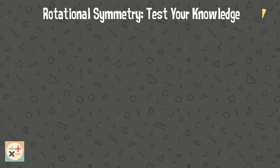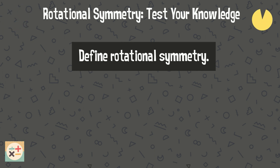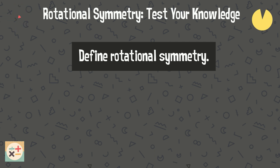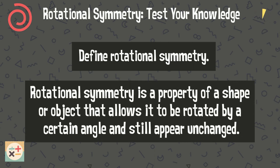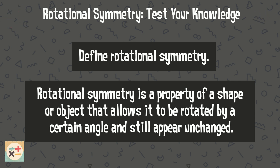Question 1: Define rotational symmetry. Pause the video while you answer this question. Rotational symmetry is a property of a shape or object that allows it to be rotated by a certain angle and still appear unchanged.